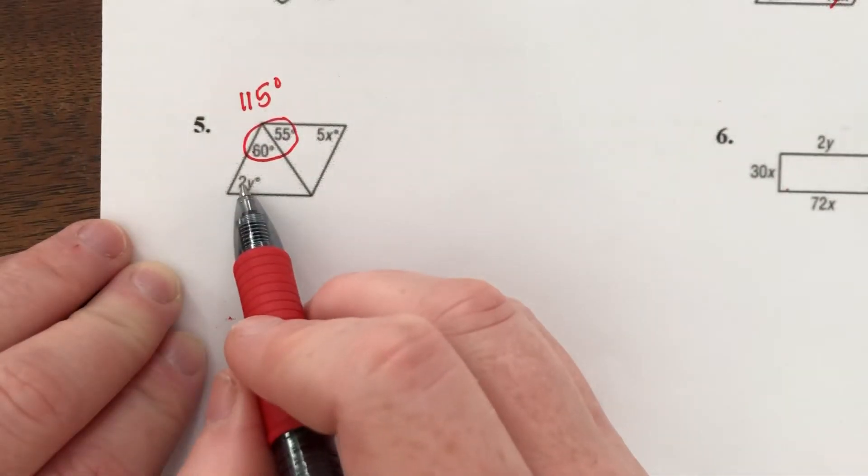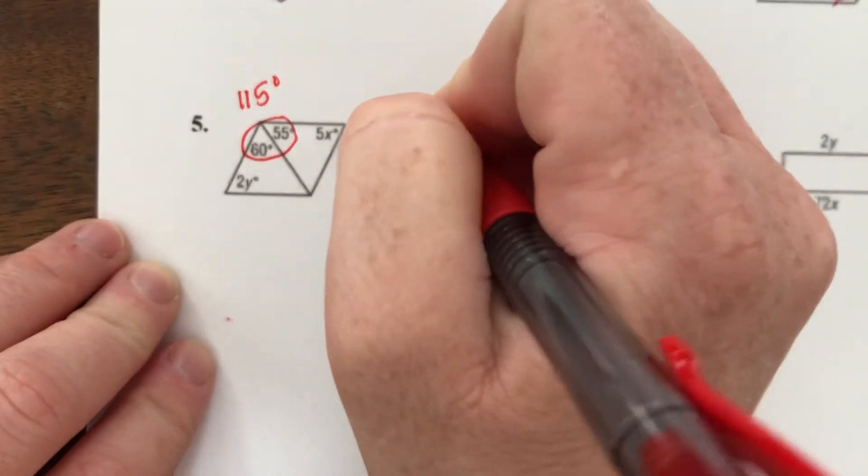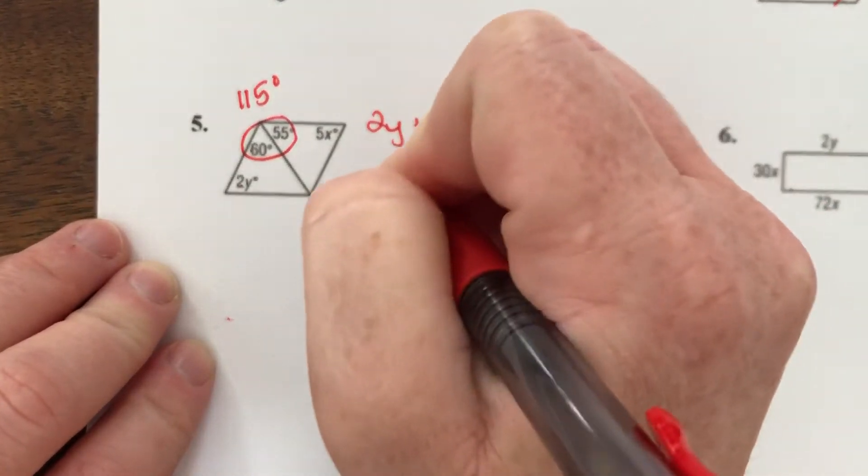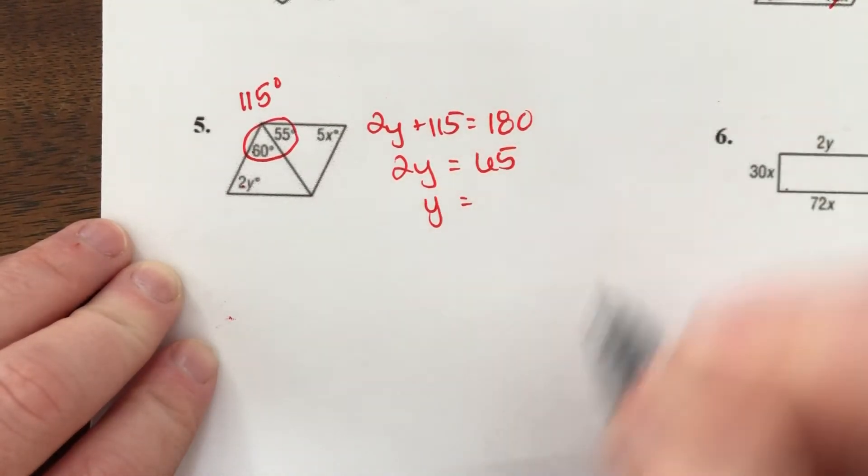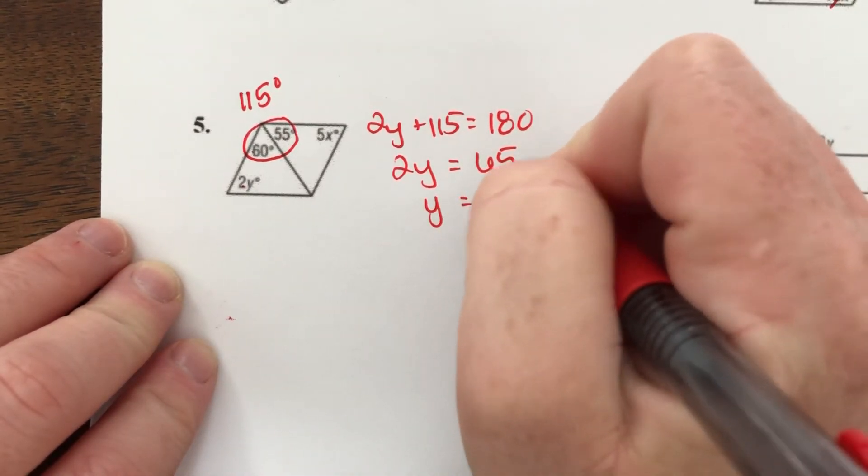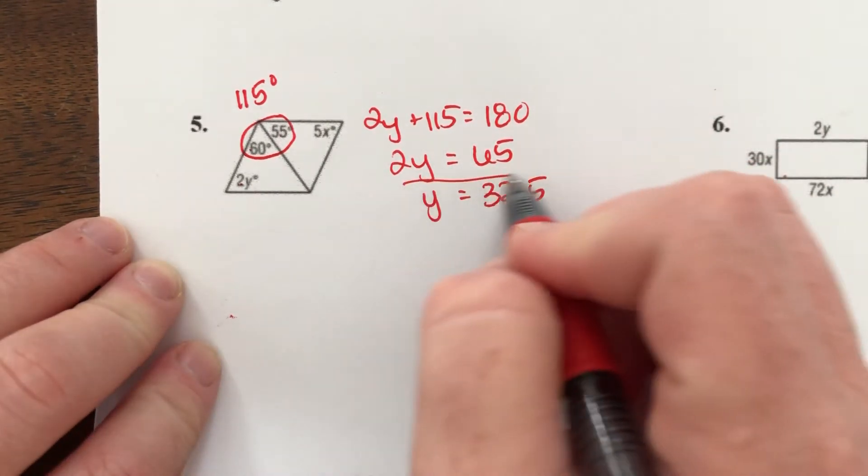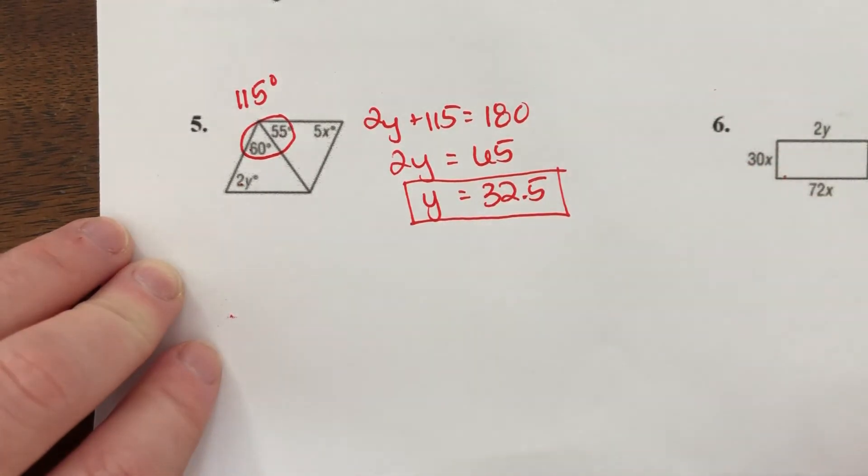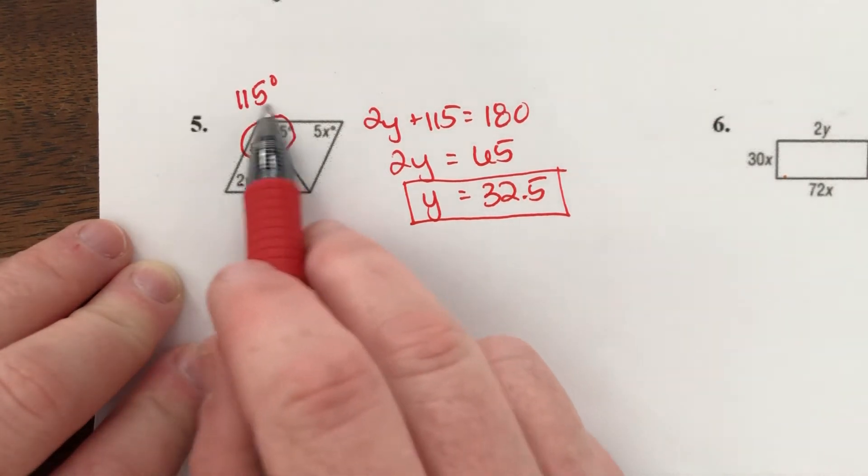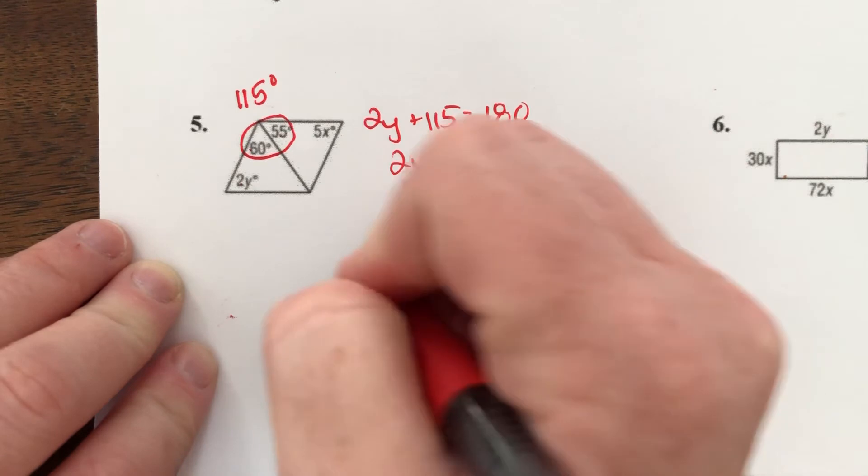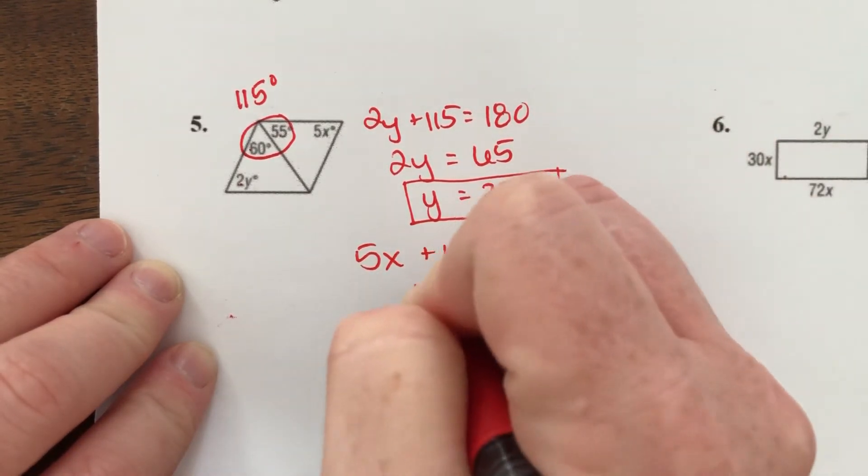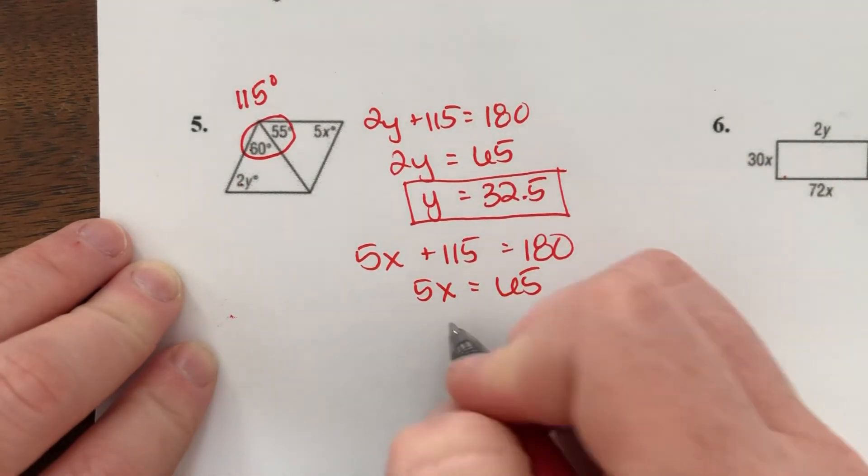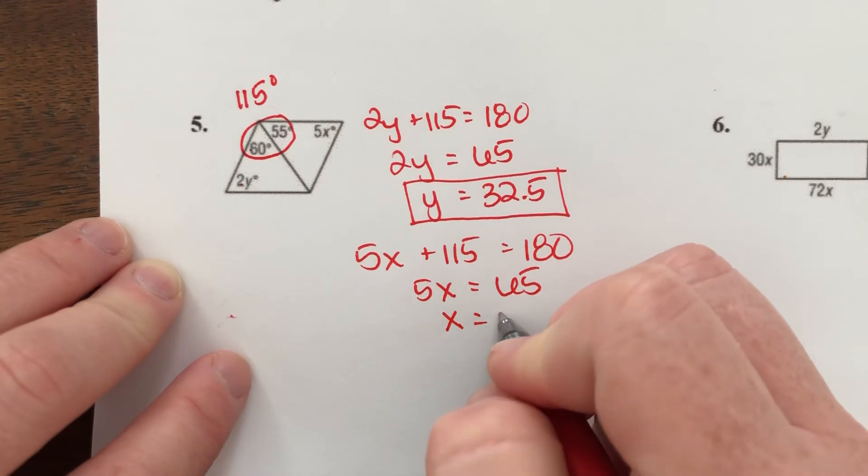So 2y plus 115 is going to equal 180. That means 2y is going to equal 65. So y has to equal 32.5. And if this whole thing is 115, 5x and 115 add up to 180. So 5x has to equal 65, which means x equals 13.